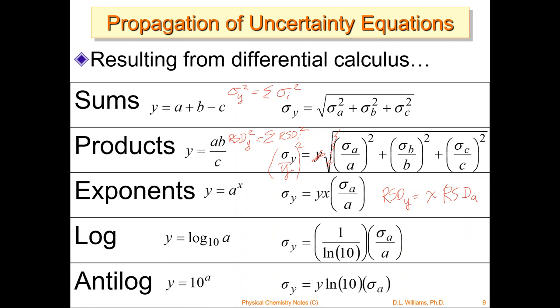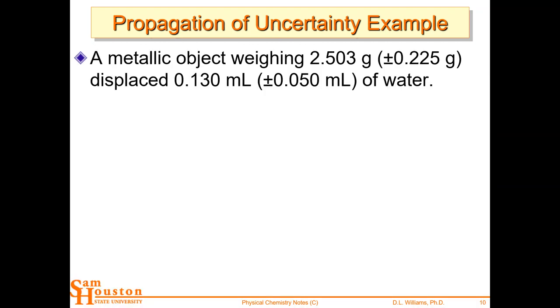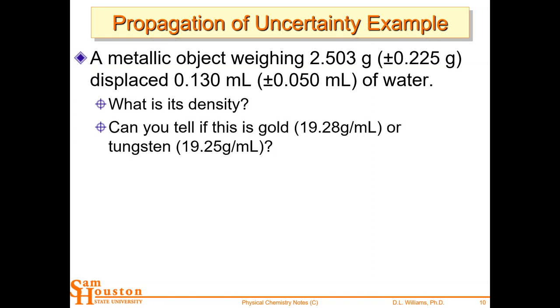There's lots of practice available on our blackboard page for this. But let's quickly in two minutes go through this example. So here's an example where we have two pieces of two inputs. We have a metallic object weighing two and a half grams and it displaced 0.13 mls of water. So what's the density? Well, this is straight from freshman chemistry, mass over volume. So the density is easy to calculate. But the question is, can you tell if it's gold or tungsten? Well, looking at all the numbers on our calculator, we see 19.25. And coincidentally, that's tungsten. So as a freshman, you'd make the mistake. You'd say it's tungsten. That's what my calculator told me. But where's our uncertainty?